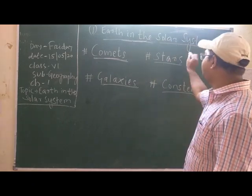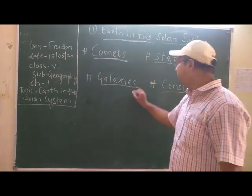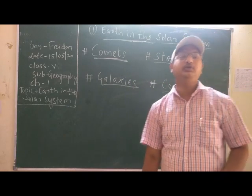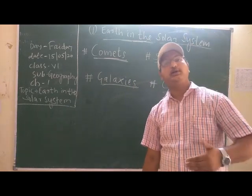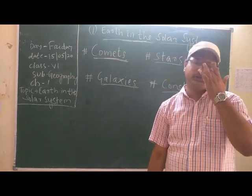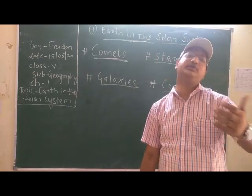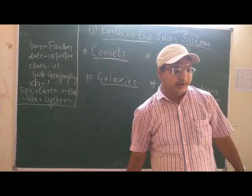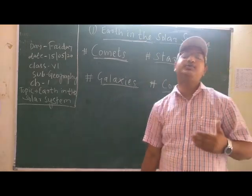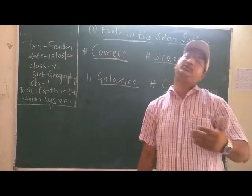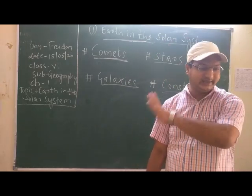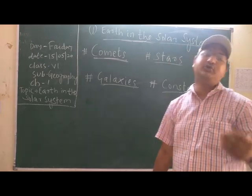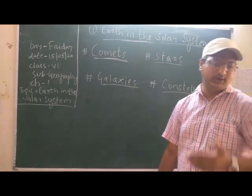So this was all about stars. Now we can say about the galaxy. We know the universe in which our solar system is present is known as the Milky Way. A large group of stars is called a galaxy. The definition: the group of stars is called a galaxy. The planets, the satellites, the asteroids of our solar system revolve around the sun in a galaxy known as the Milky Way.